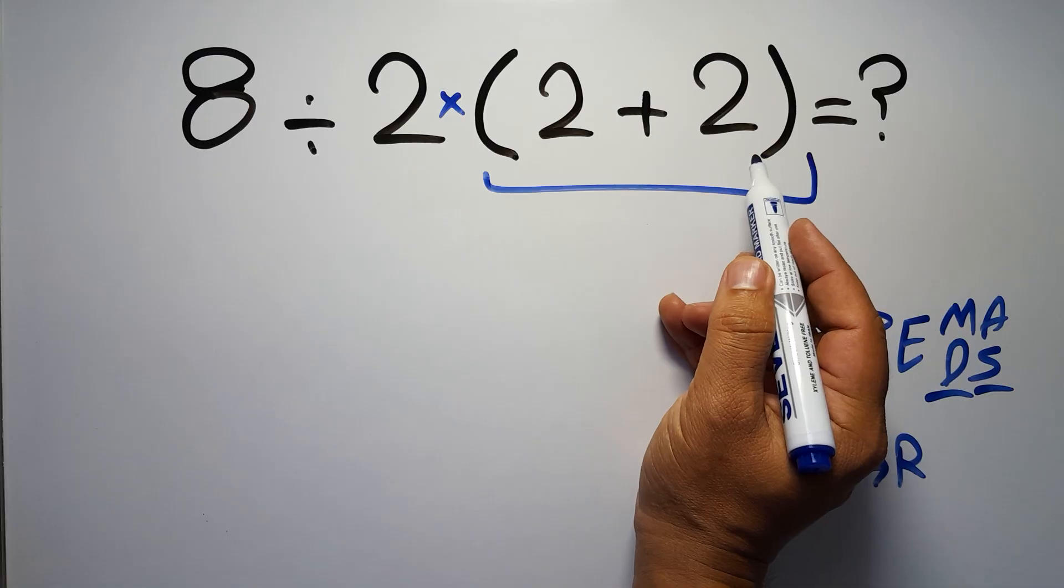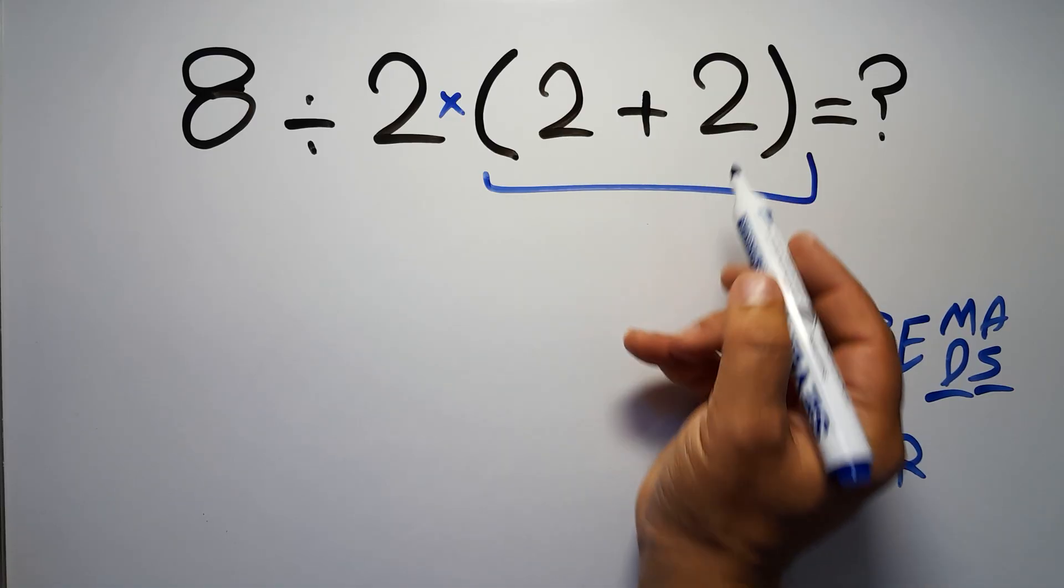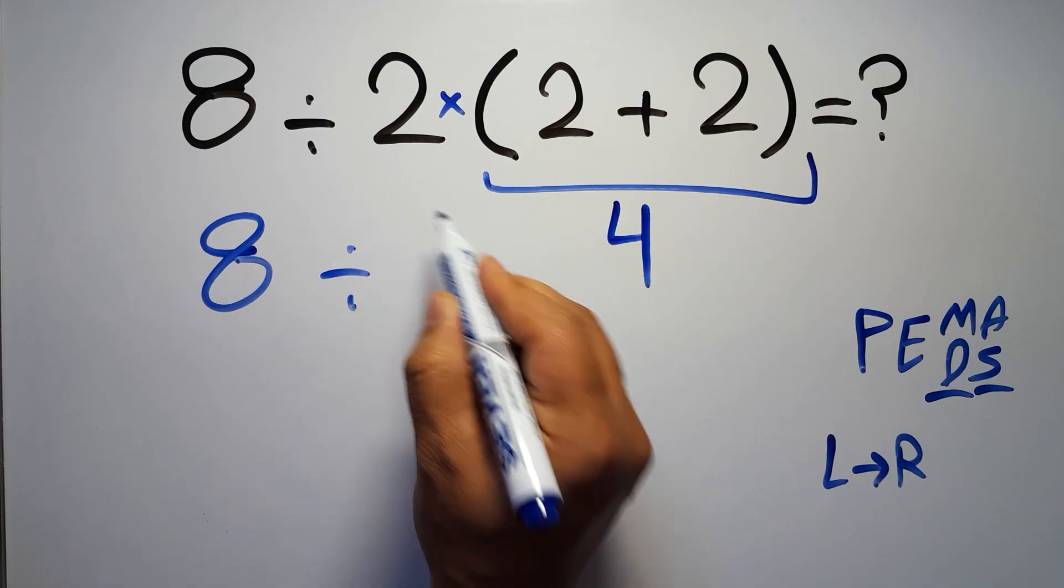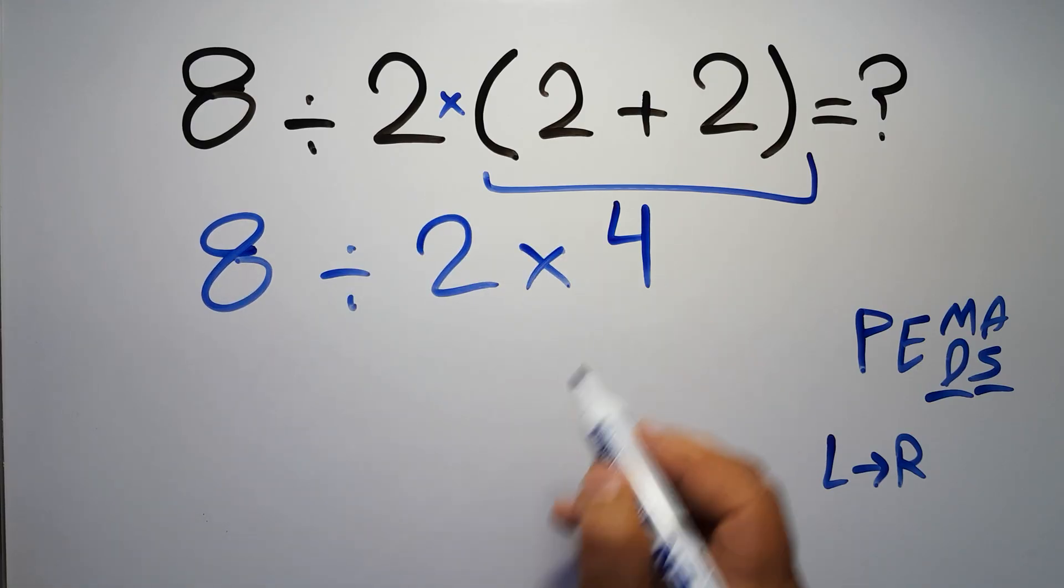So first this parentheses. Inside this parentheses we have 2 plus 2, which equals 4, so we have 8 divided by 2, then times 4.